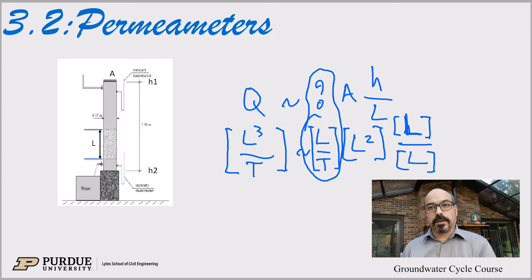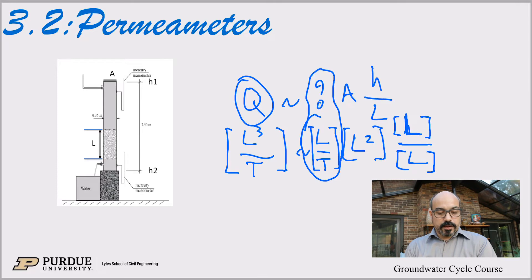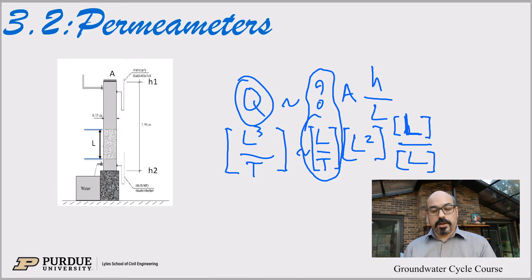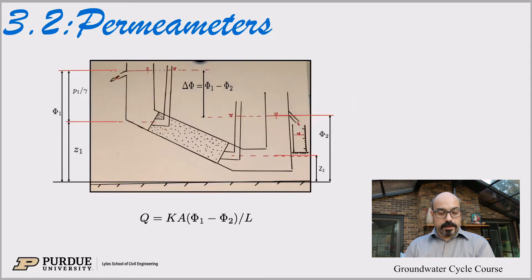Dimensions of velocity, but not quite velocity. The other thing we don't know is the functionality: we're saying Q should be proportional to A·H/L, but we don't know if it's a linear relationship, exponential, or some other function. The relationship between Q and those factors could be linear, but it doesn't have to be. We'll see in a minute what we can do about this.